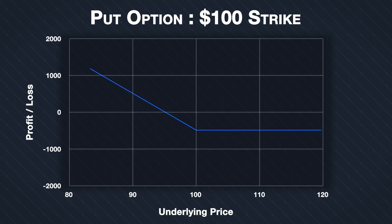Buying a put option gives the holder the right to sell the underlying asset at the strike price on the expiry date. The option buyer pays a premium for this right. So why not just sell or short the underlying asset directly in the first place?